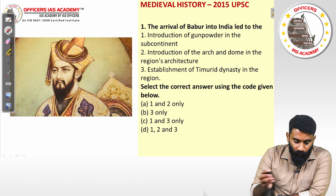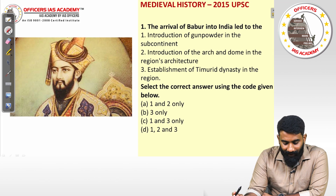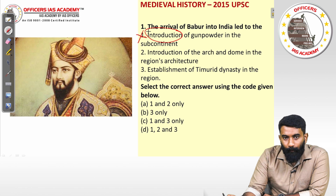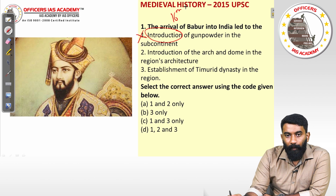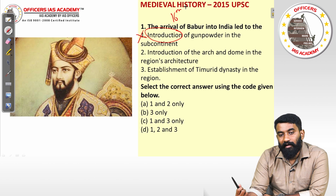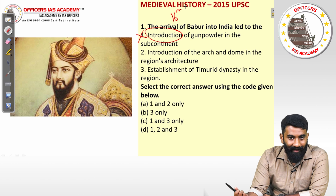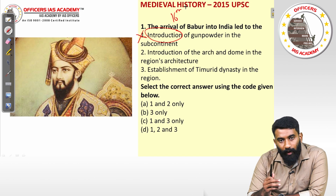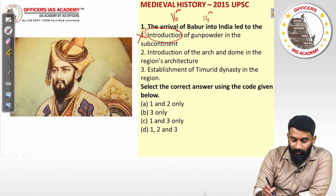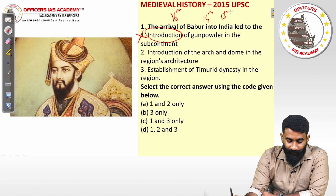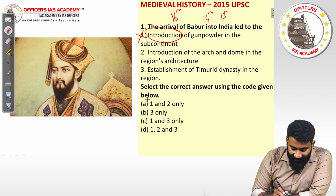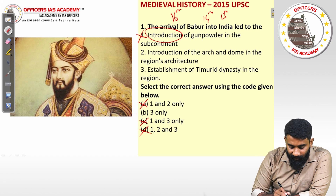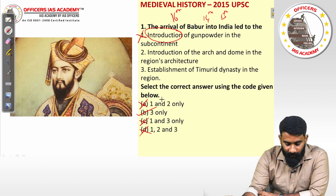Starting with question one: the arrival of Babar into India led to the introduction of gunpowder in the subcontinent. Did Babar introduce gunpowder into India? The answer is no. Babar came in the 16th century and he did not introduce gunpowder — he introduced cannons. Gunpowder had been introduced into India much earlier, from the 13th or 14th century. So the first statement is wrong, and you can eliminate options A, C, and D. The answer is option B.